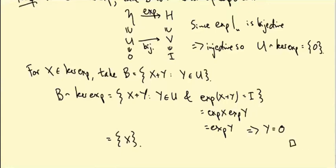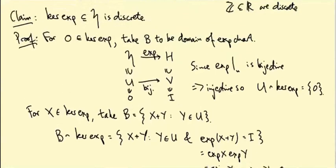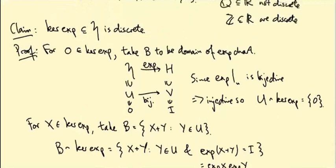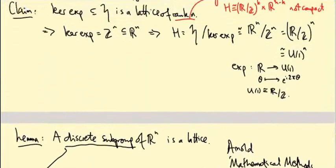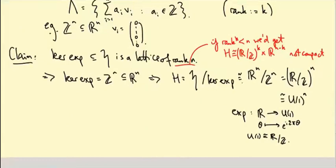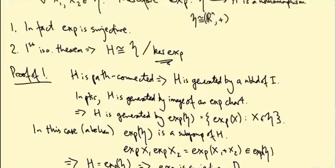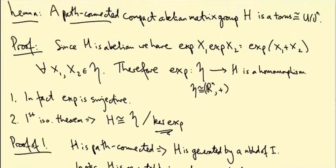This shows that the kernel of the exponential map is a discrete subgroup of the algebra. Invoking the result — which we didn't prove — that any discrete subgroup of Rⁿ is a lattice, and using the first isomorphism theorem, we conclude that H is isomorphic to U(1)^n, which proves that any path-connected compact abelian matrix group is a torus.